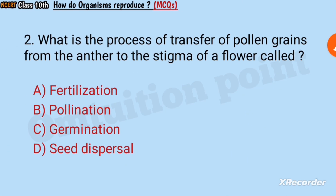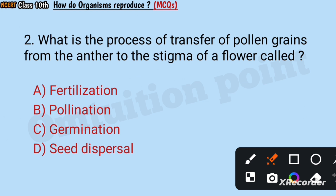Question number two: What is the process of transfer of pollen grains from the anther to the stigma of a flower called? Fertilization, pollination, germination, or seed dispersal? Answer: Pollination.